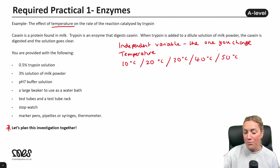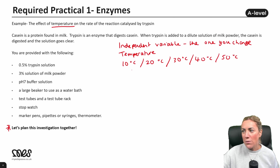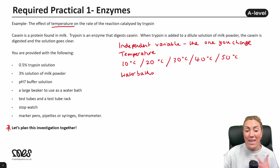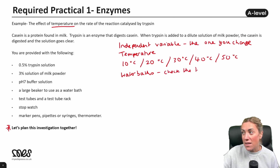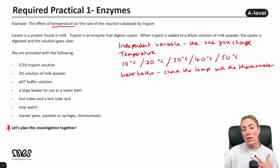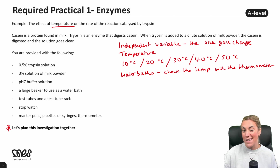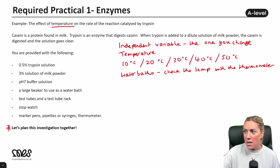We need to think about how we're going to change the temperature. We'll use water baths, setting them to five different temperatures. We can check the temperature with the thermometer — you're controlling it using the water bath but monitoring it with the thermometer to make sure each water bath is staying at the correct temperature and not fluctuating, because that could affect your results.